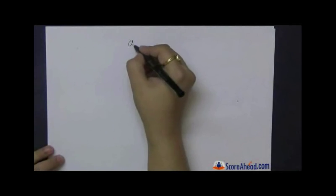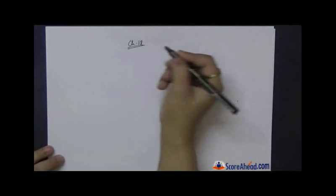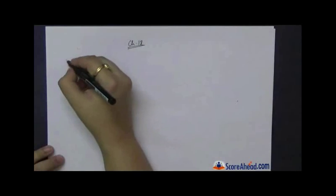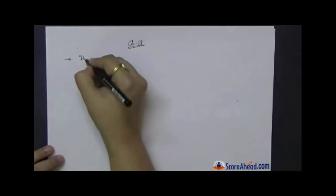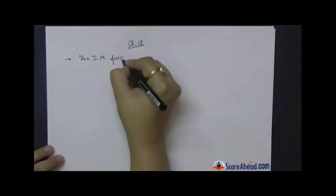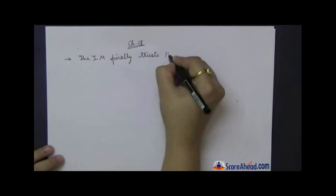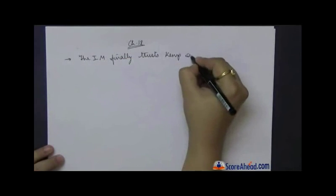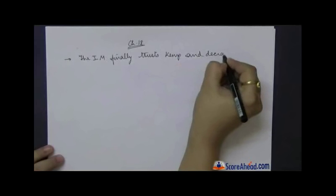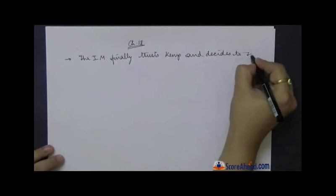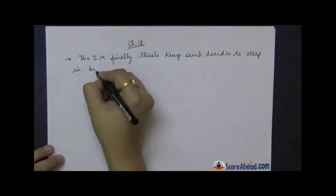So chapter number 18, we find that the Invisible Man finally trusts Kemp and decides to sleep in his room.